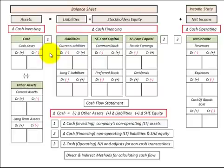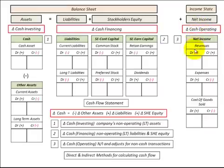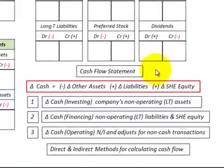A cash flow statement includes three different sections. First would be the change in cash for investing the company's non-operating long-term assets. Second would be the change in cash for financing non-operating long-term liabilities. Third would be the cash from operations, where we take our net income and adjust it for non-cash transactions. The cash flow statement can be calculated using two different methods: the direct method and the indirect method.